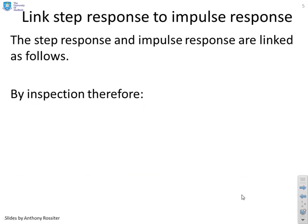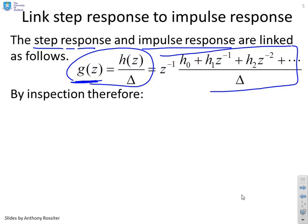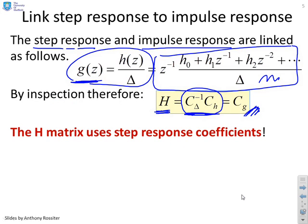However, this is where we get a nice advantage. The step-response and the impulse-response are actually very closely linked by a simple formula. The step-response, g(z), is simply the impulse-response, h(z), divided by Δ. So I've written that formula out here. If I actually carry out the algebra for that, what you'll find is my definition of my H matrix was CΔ⁻¹CH. This is exactly equivalent to what we've got up here. So in fact, my H matrix is the Toeplitz matrix of the step-response coefficients. So that's nice and convenient, so I can just write H down as the Toeplitz matrix of the step-response coefficients.